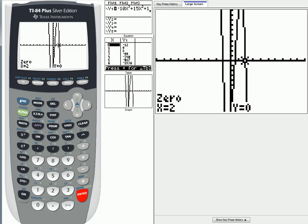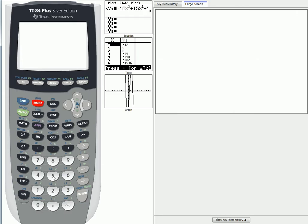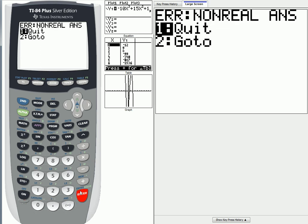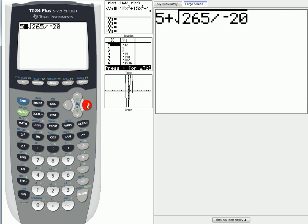If we just type in 5 plus the square root of 265 and then divided by -20, this will give us... wow, that's not even right. Let me go back here. I forgot to cursor outside of my radical. So let's delete this, go back here and cursor outside, then we divide by -20. This will not give you the correct answer.